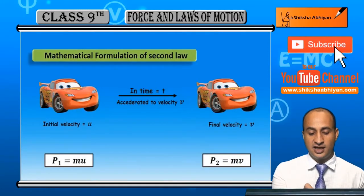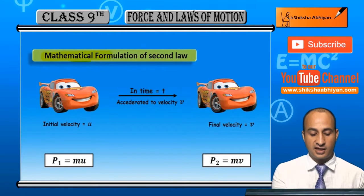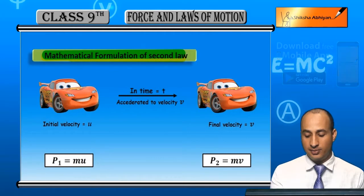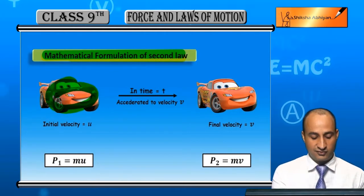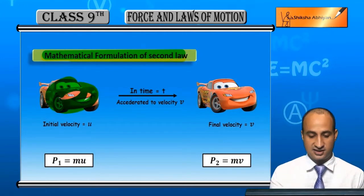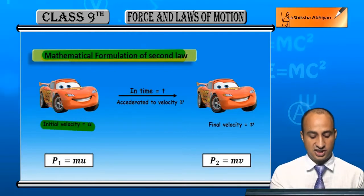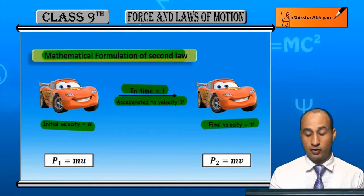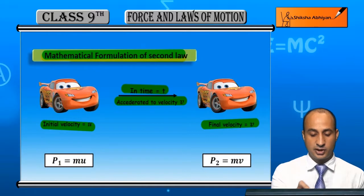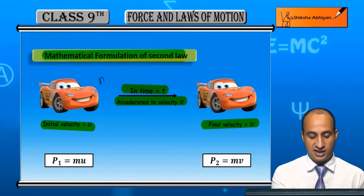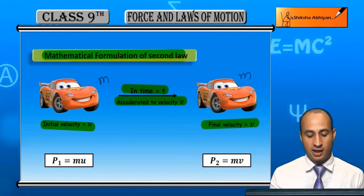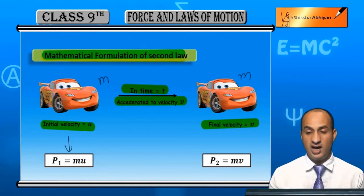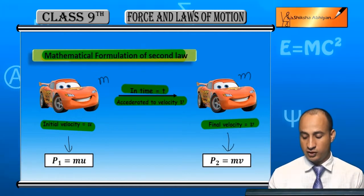Mathematical formulation ke liye dekhein: yahan par main do mass le leta hoon. First mass and second mass. Isme initial velocity u hai aur final velocity v hai. In time t mein acceleration hua, velocity v tak. Body ka mass m lete hain — mass mein koi change nahi aata. Jab pehle velocity u thi, to momentum p1 = mu.